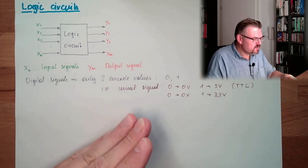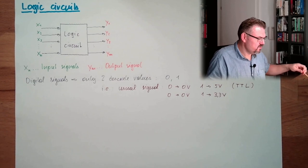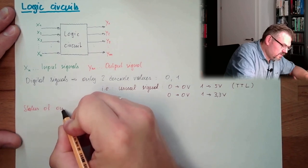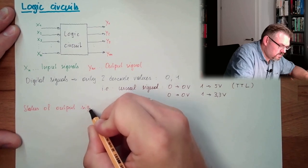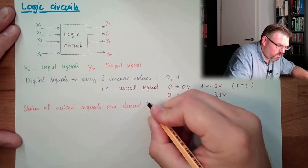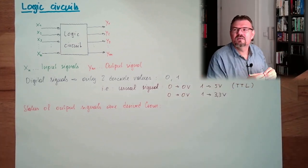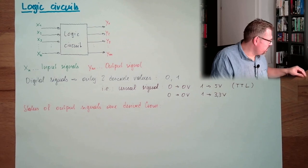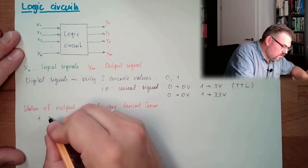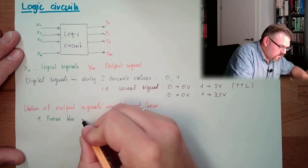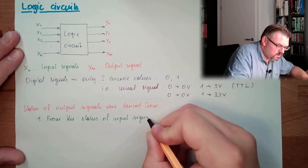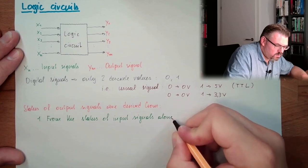And the output signals are derived from the input signals. So the status of output signals are derived from - and here we have now several possibilities. We have one possibility from the status of input signals alone.